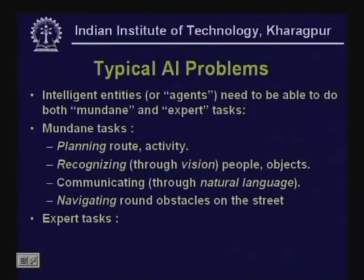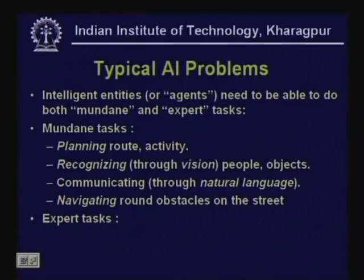Examples of mundane tasks are: planning a route — suppose you want to go from here to the market, or from here to a particular place in Delhi, and you have to plan your journey and path. Then there is recognizing objects or recognizing faces of people, which requires vision. Thirdly, we communicate with each other through natural language. Fourthly, we navigate around obstacles in the street.